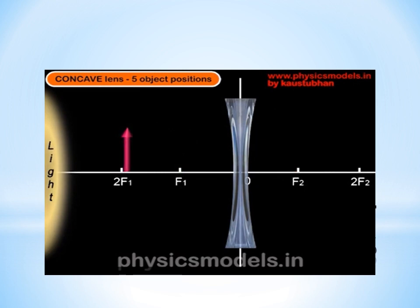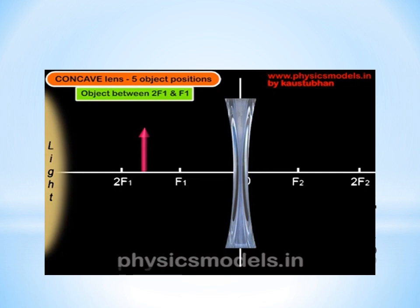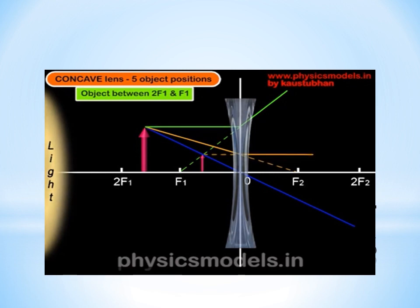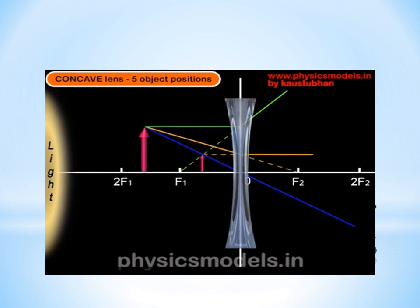Next, we move the object closer to the lens and place it somewhere between 2F1 and F1. We have the three rays and here again we could draw a ray through F1, but it would be very sloping and probably hit the base of the lens, so we don't use it. The green, orange, and blue rays behave exactly as before, and when we project the dotted lines, they form a very similar image which is virtual, erect, diminished, and positioned between O and F1.